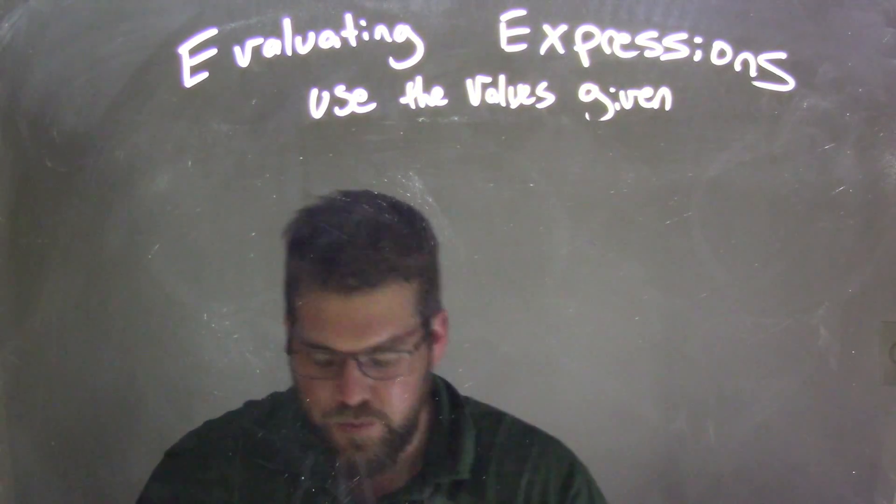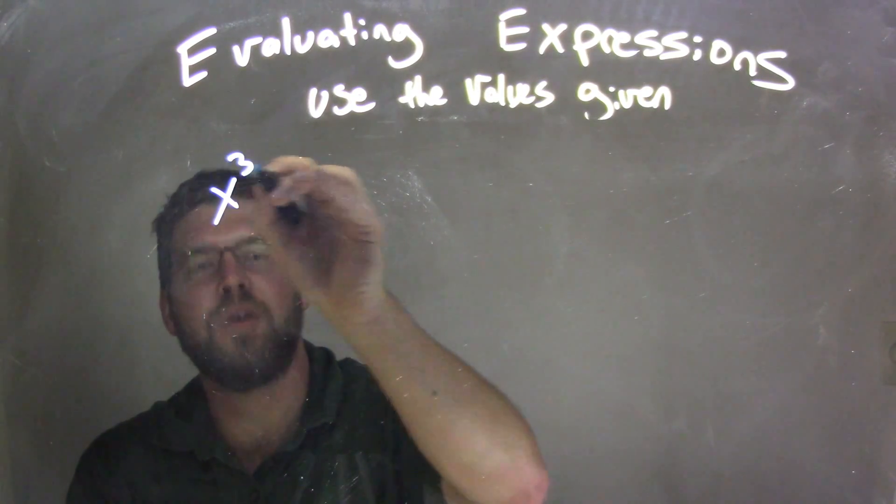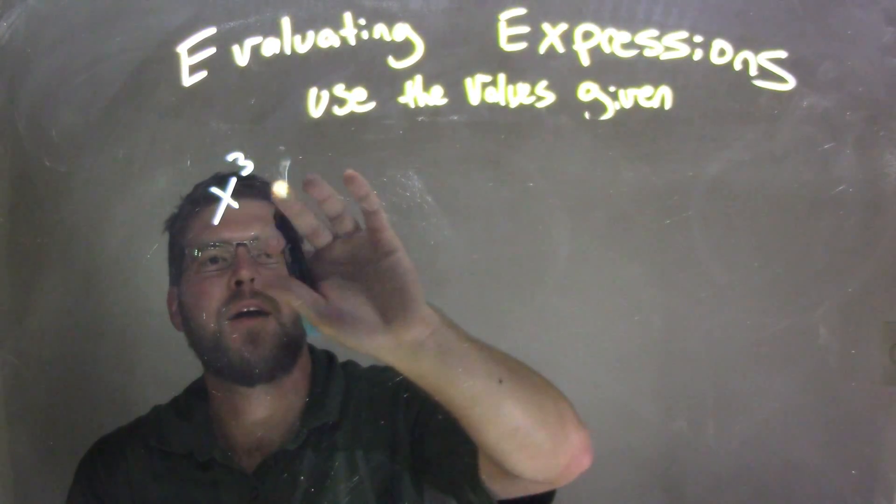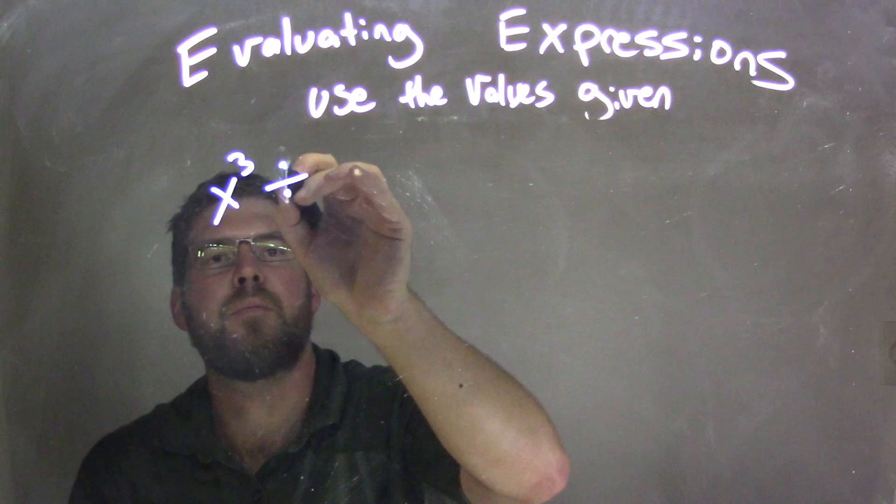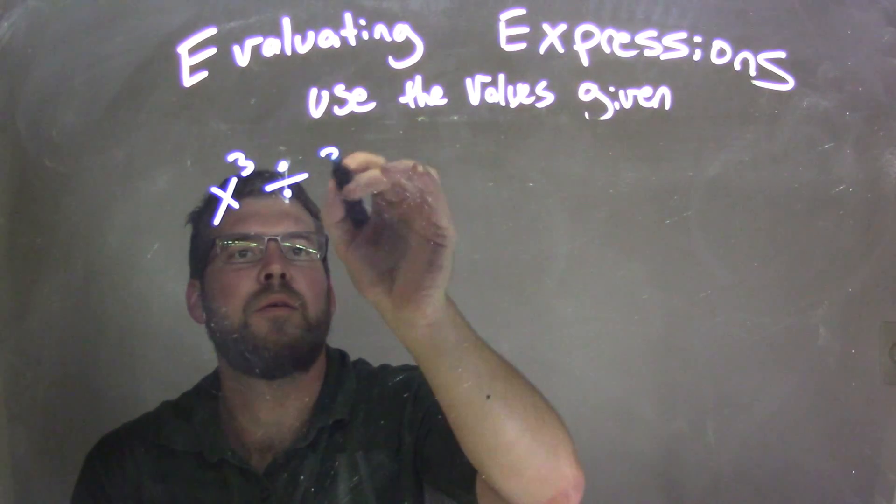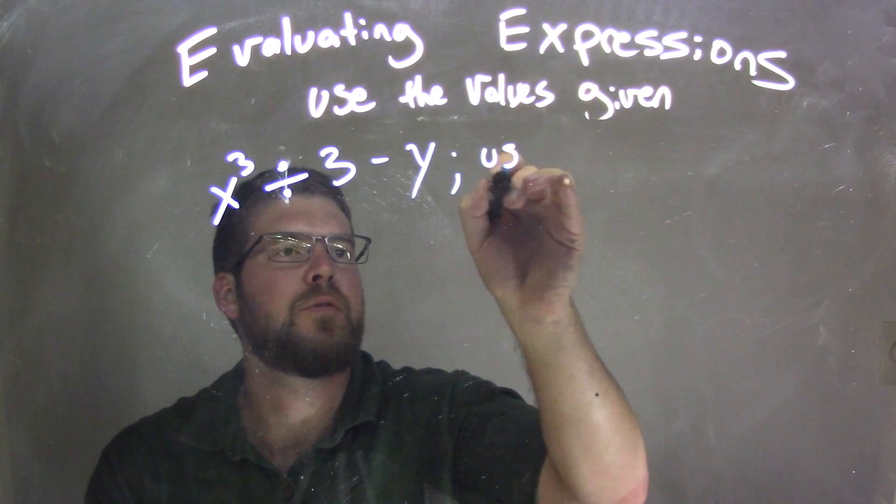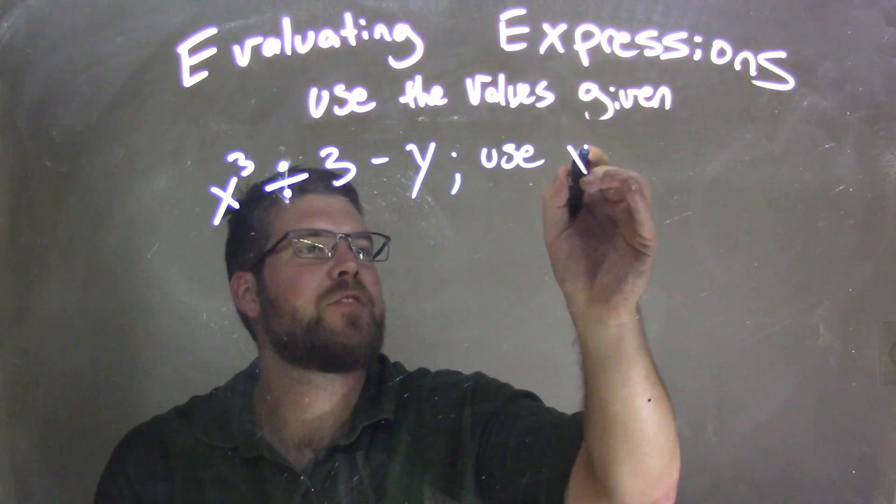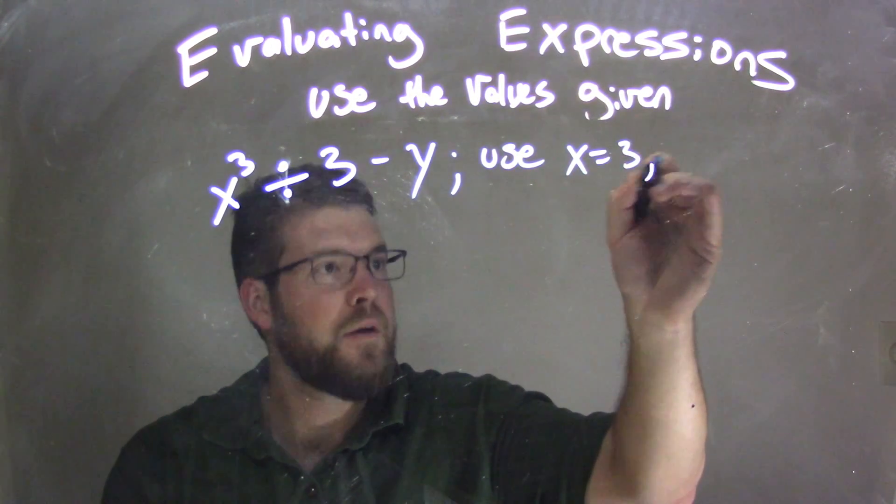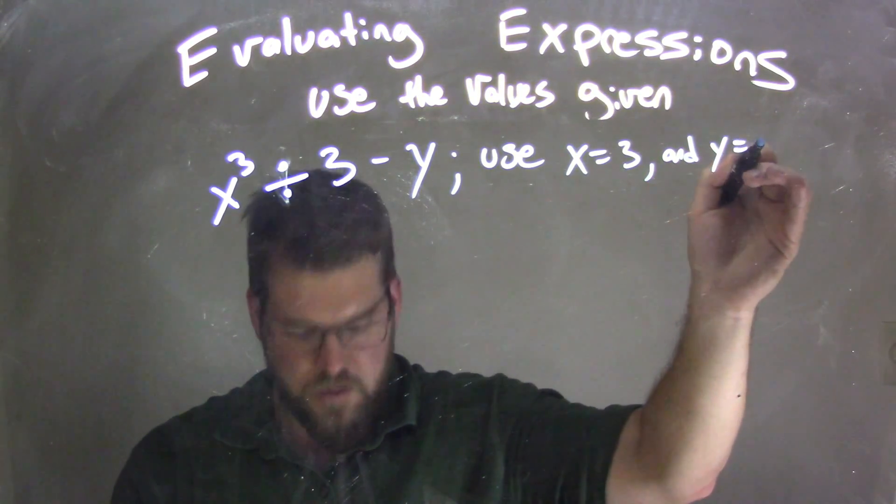So if I was given this expression, x to the third divided by 3 minus y, and we wanted to use x equals 3 and y equals 1.